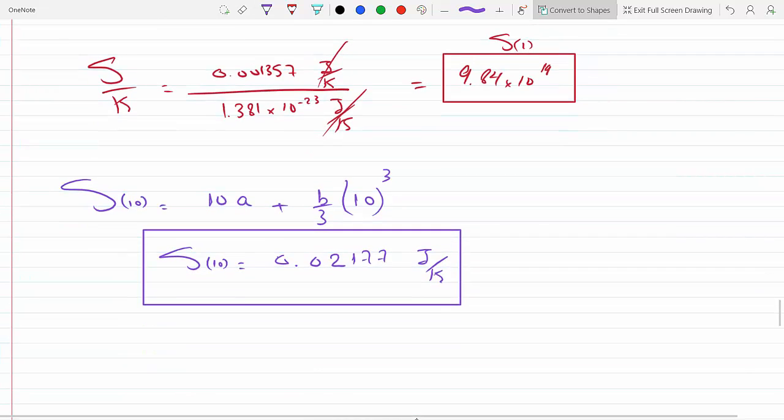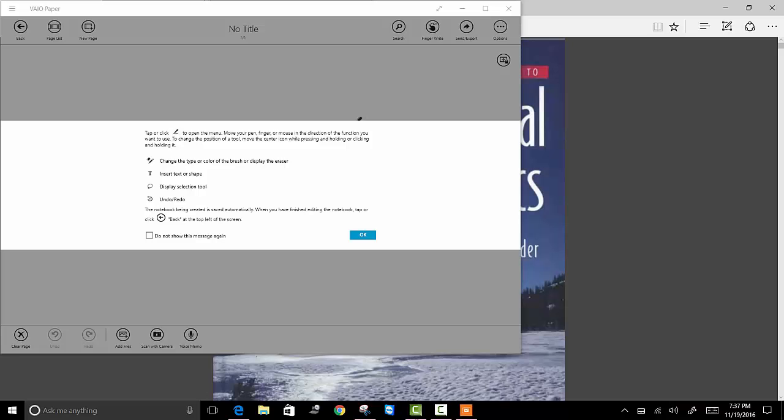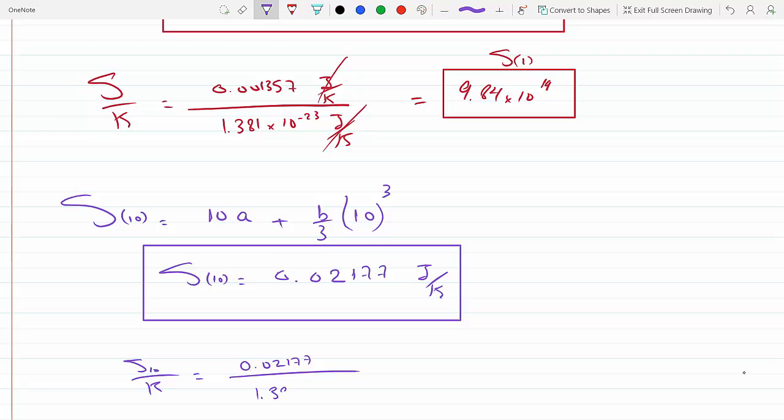If I need to make this dimensionless, I would divide it by Boltzmann's constant, that's 1.381 times 10 to the minus 23. This is in joules per kelvin, this is in joules per kelvin. This goes away.